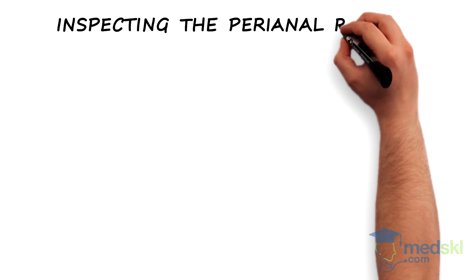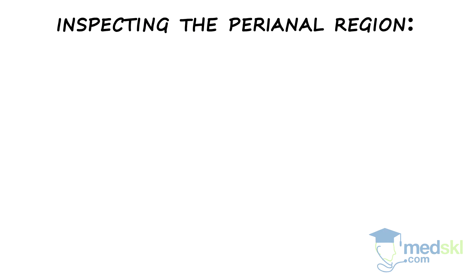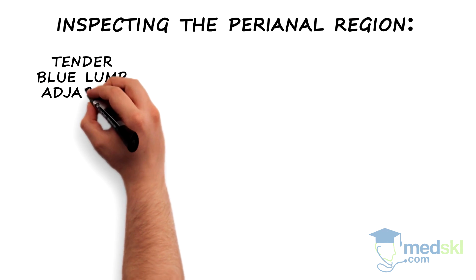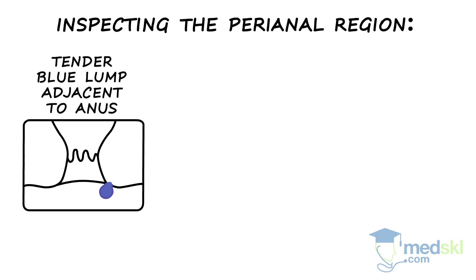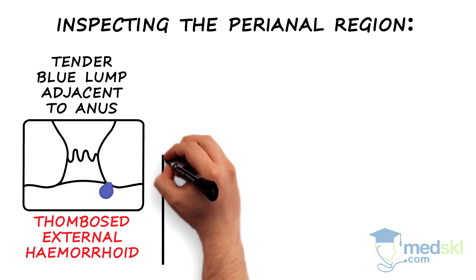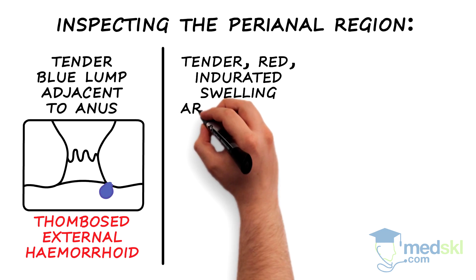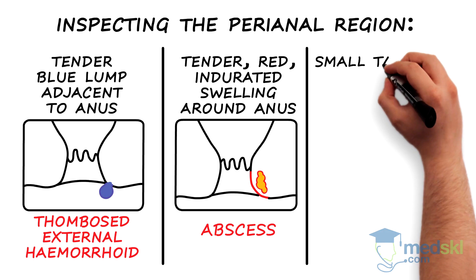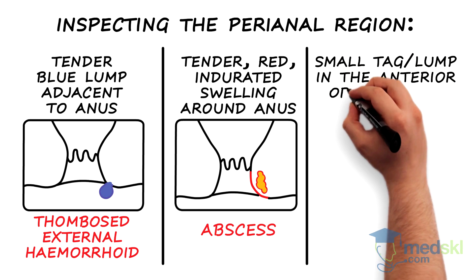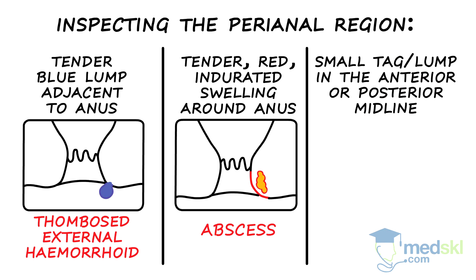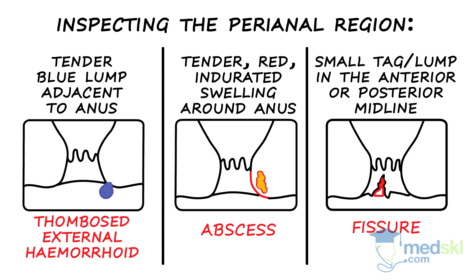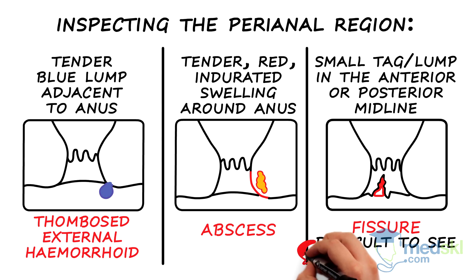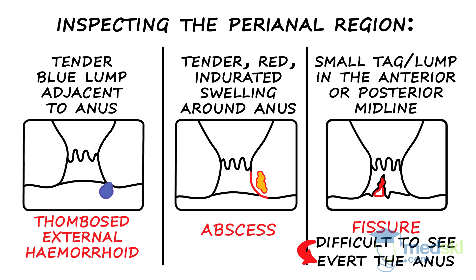When inspecting the perianal region, here are a few things I look for. A tender blue lump adjacent to the anus suggests a thrombosed external hemorrhoid. A tender, red, indurated swelling around the anus suggests an anorectal abscess. A small edematous tag located in the anterior or posterior midline suggests an anal fissure. It is frequently difficult to see the actual fissure because people clench their buttocks as a result of the pain. You should try to gently spread the buttocks and avert the anus to see the fissure.